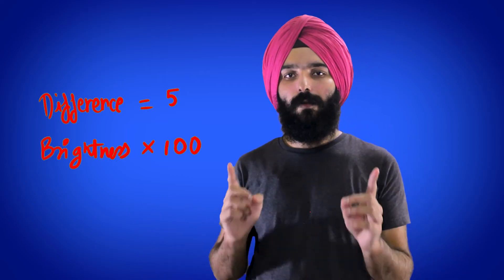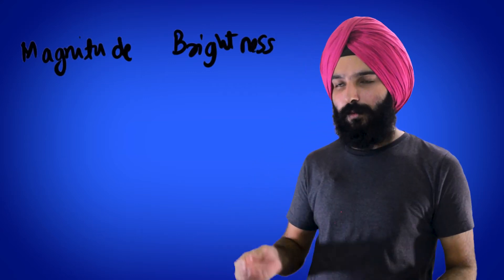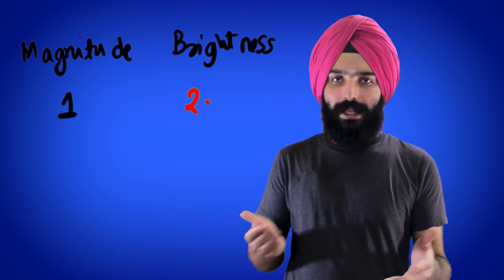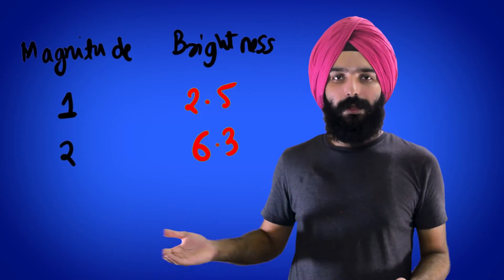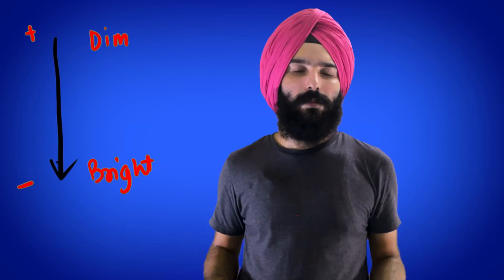Since it is a non-linear scale, in this case the difference is actually 6.3 times. This is because the scale is physically designed so that a magnitude difference of 5 results in a brightness difference of 100, which gives us 100 to the power of 1/5, resulting in 2.5119. So if there's a magnitude difference of 1, the brightness difference is 2.5, and raising it to the power of 2 gives us 6.3. Here's the key: the more negative the apparent magnitude, the brighter the star.